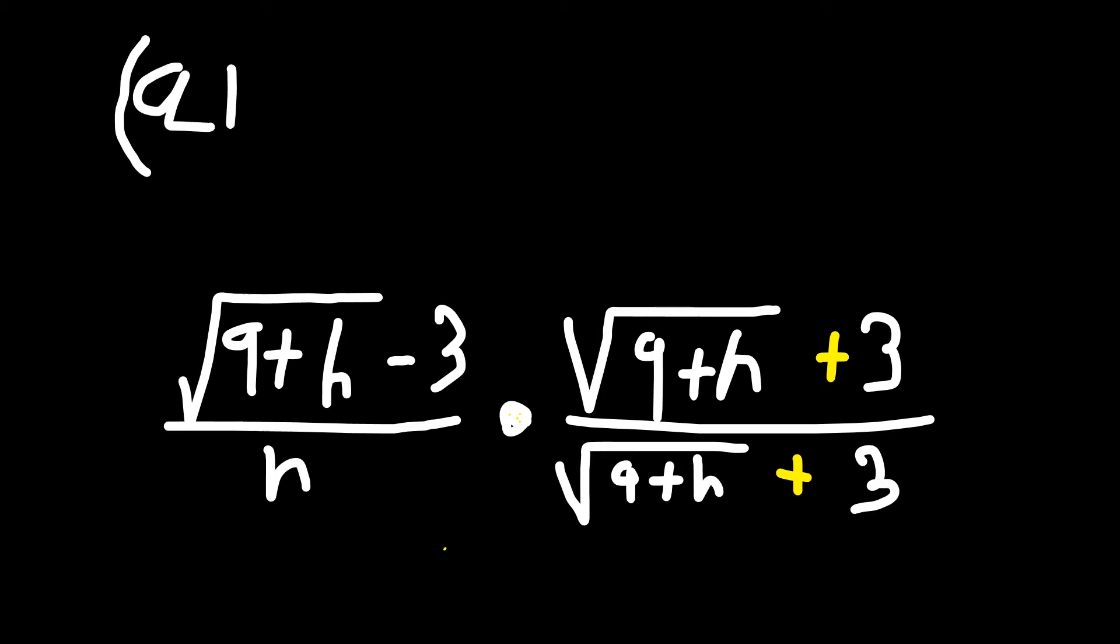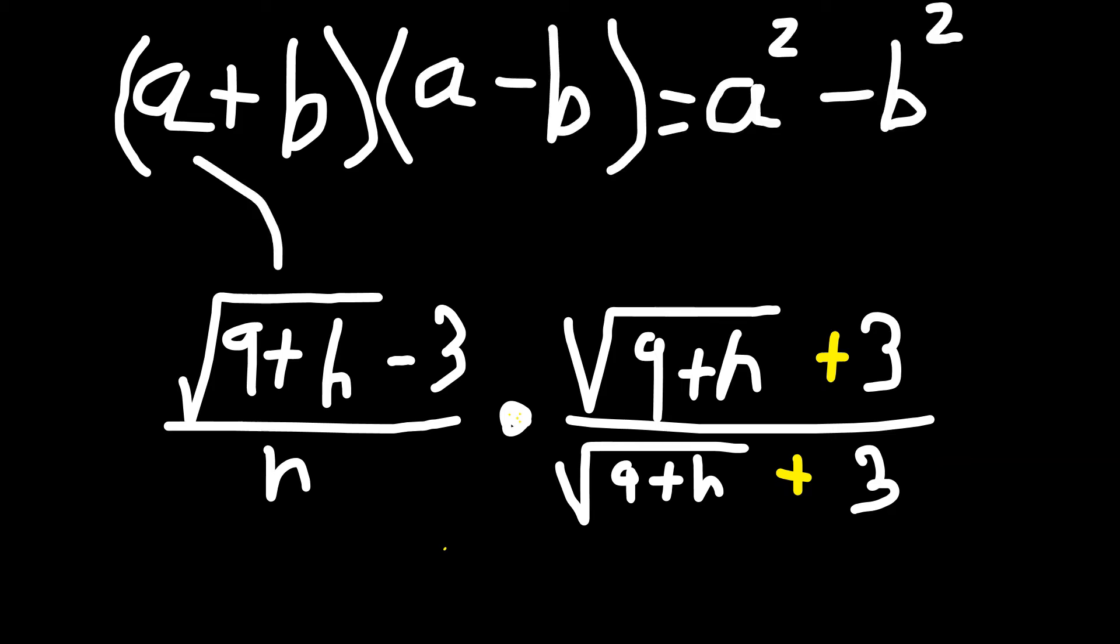How do you handle it from here? You've got to remember that this is equivalent to a plus b times a minus b, which is then a squared minus b squared. In our case, a is the root of 9 plus h, and b is 3. So it's going to give us this.